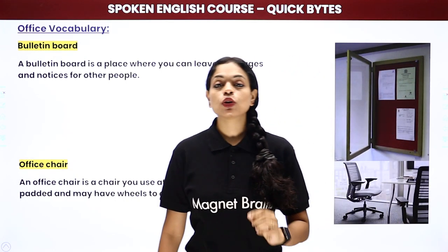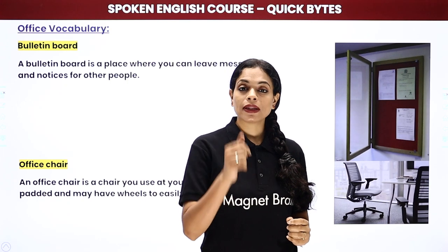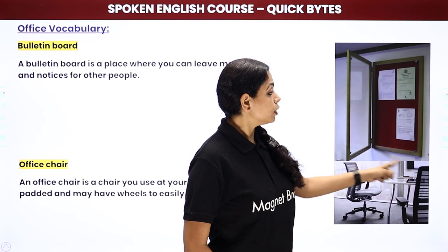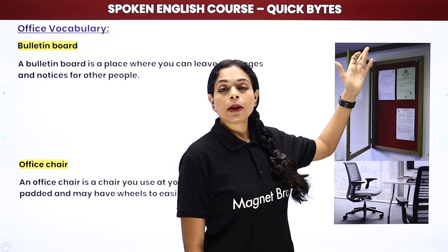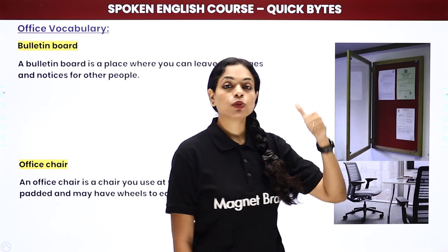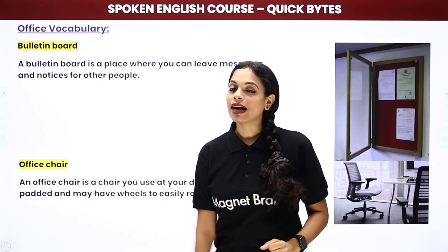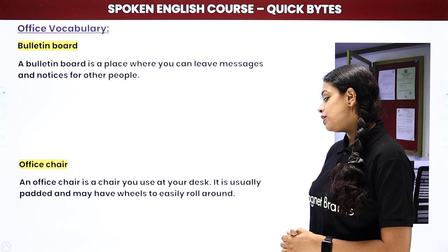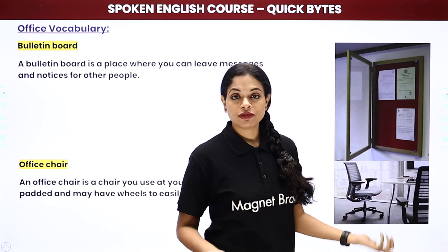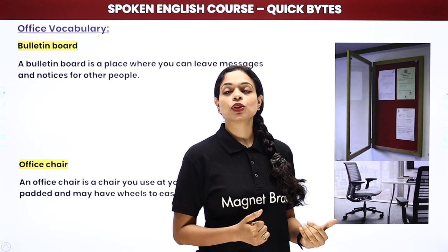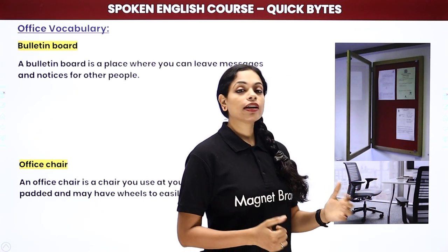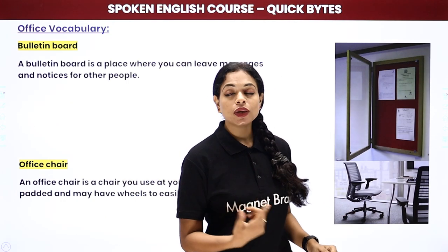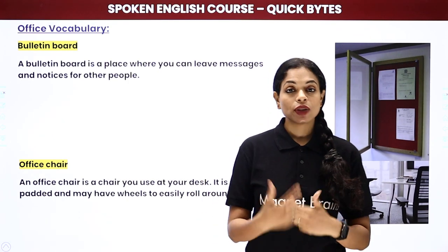Then we have a bulletin board. On a bulletin board, any important piece of information or paper is attached using paper clips or bulletin board pins. So any important notice or picture you want to display, you can pin it on the bulletin board using bulletin board pins. Then we have an office chair — a chair you use at your desk. It is usually padded and many have wheels to easily roll around. You have to sit for almost 9-10 hours, so it's cushioned and has rollers so you can move around easily.